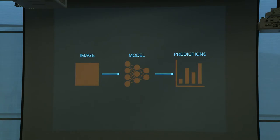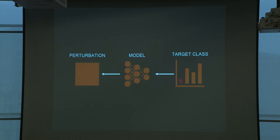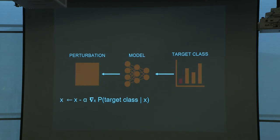The idea behind generating adversarial examples is very simple. The way we train a typical deep learning model: you feed an image into a model, get out predictions as a distribution over classes, and optimize the weights to maximize the probability of the actual target class. When you generate an adversarial example, you apply the same reasoning — except you ask how to change the image to maximize a particular adversarial class. We use gradient descent: take the gradient of the adversarial class with respect to the image, then perturb the image step by step, subject to constraints keeping it visually similar via a clipping procedure.